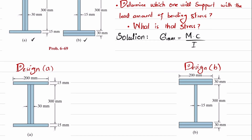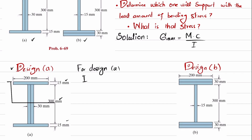Let's start with Design A. For Design A, I will find I about the neutral axis. You can see this is Design A. The neutral axis passes through the mid-height. The total height is 315 plus 15, so the neutral axis will be at a distance of 330 divided by 2, which is 165 millimeters.